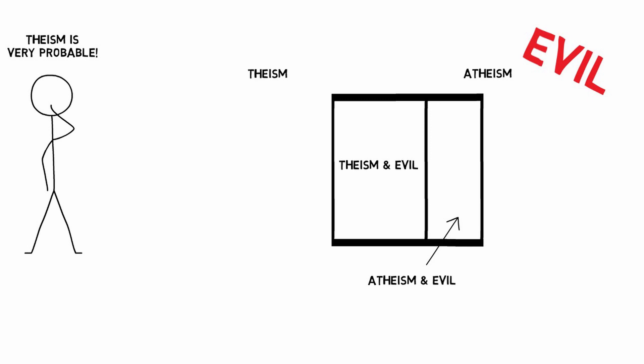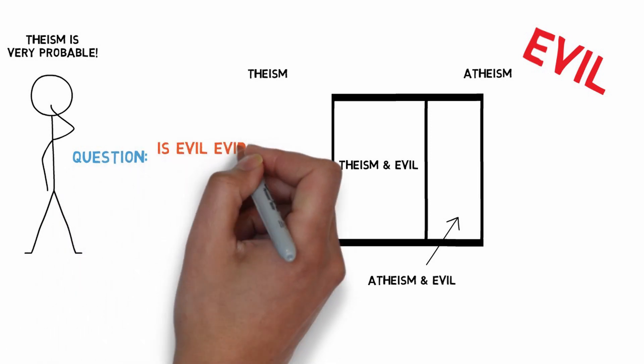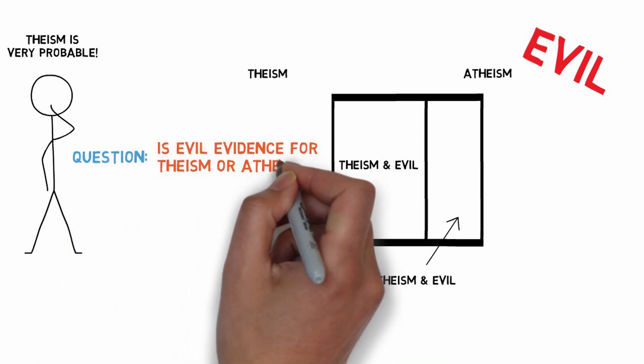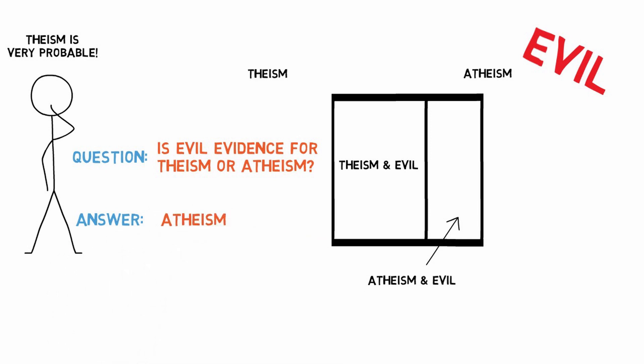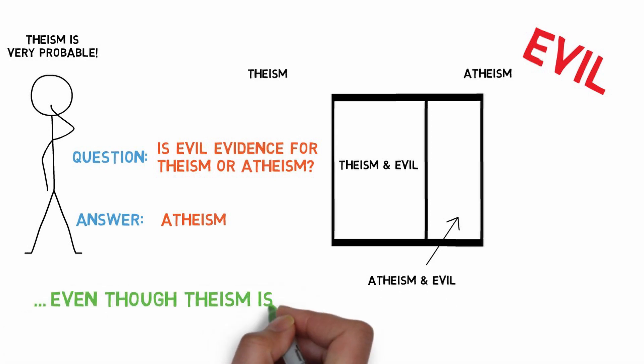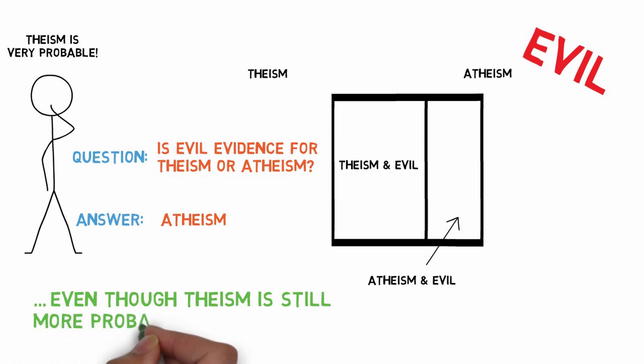You can see our final probabilities just by looking at the bar. Is evil evidence for theism or atheism? The answer is atheism again, because atheism is now more probable than it was to begin with, and theism is less probable than it was to begin with. Remember, we are thinking about evidence as probability-raising. So evil raises the probability of atheism — and this is the case even though in our example theism is still more probable overall, since it takes up the biggest portion of our bar.